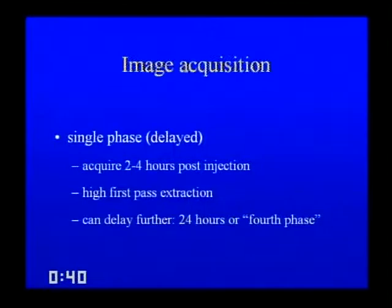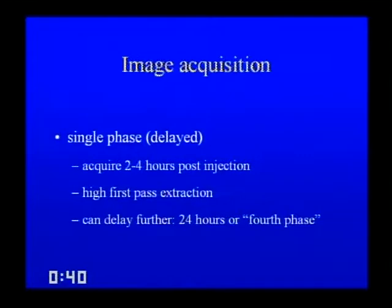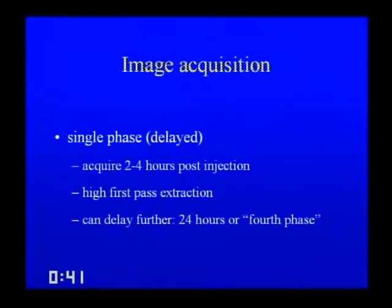Two general types of image acquisition exist. The first is standard single-phase delayed imaging — the patient is injected and imaged two, four, or six hours later. We wait not because bone uptake is slow — first-pass extraction is actually fairly high and rapid — but because we are waiting for soft tissues to clear. In fact, if you send the patient immediately to dialysis after injection, the bone scan quality may be even better due to artificially enhanced soft tissue clearance.